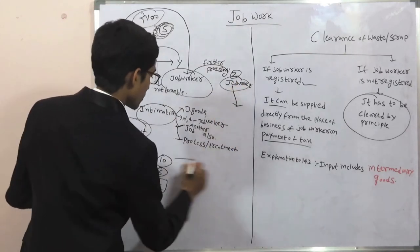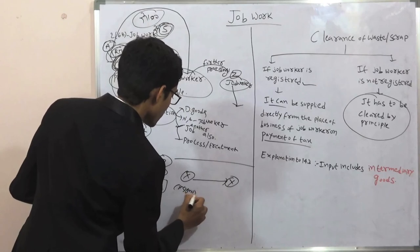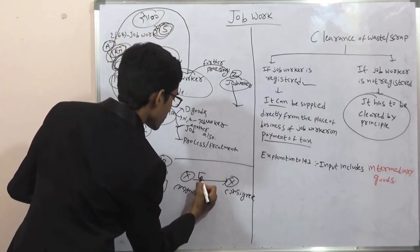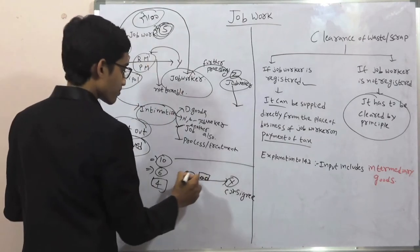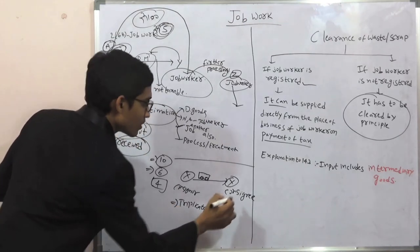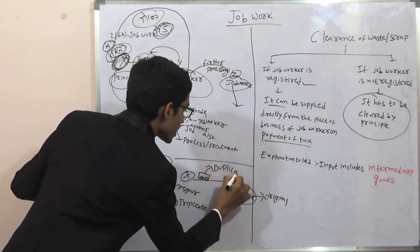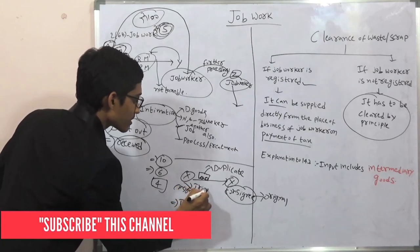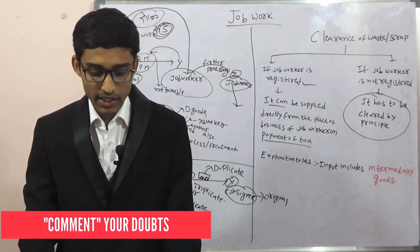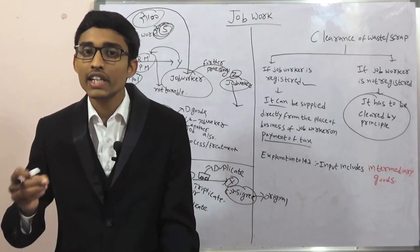For example, X is the consigner and Y is the consignee, and goods are being sent through a transporter. He has to issue the delivery chalan in triplicate: original for the consignee, duplicate for the transporter, and triplicate for the consigner. The delivery chalan should be serially numbered, not exceeding 16 characters, and should be issued at the time of removal of goods in lieu of invoice.